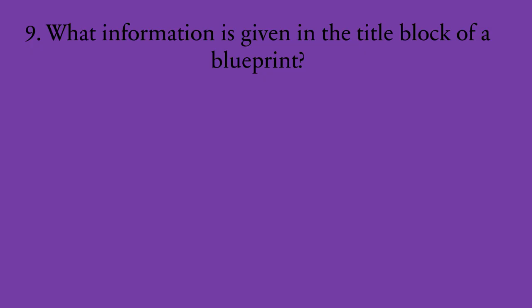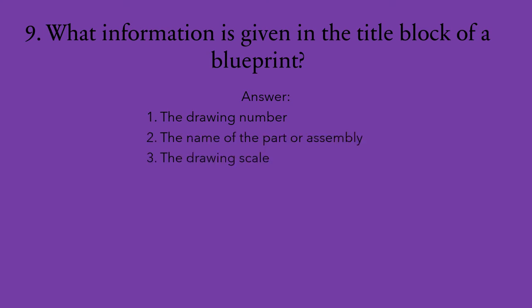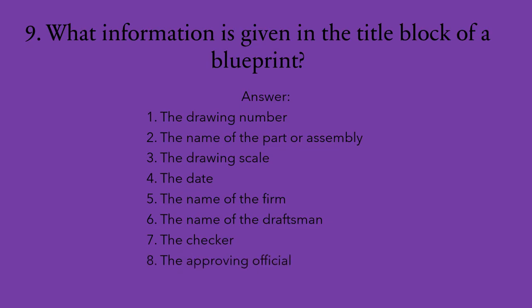Number nine: what information is given in the title block of a blueprint? The title block is a means of identification for a blueprint. It contains at least the following eight things: one, the drawing number; two, the name of the part or assembly; three, the drawing scale; four, the date; five, the name of the firm; six, the name of the draftsman; seven, the checker; and eight, the approving official.